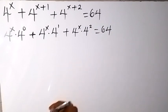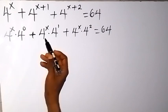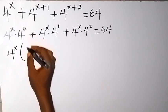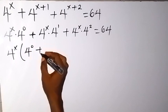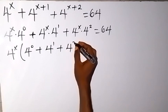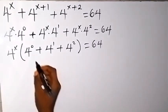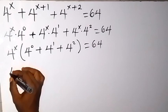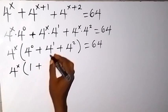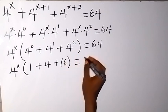From the law of indices we can see that 4 raised to power x is common. Let's bring that out: we have 4 raised to power x into bracket 4 raised to power 0, plus 4 raised to power 1, plus 4 raised to power 2, equals 64. We can rewrite this as 4 raised to power x multiplied by: 4 raised to power 0 is 1, plus 4 raised to power 1 is 4, plus 4 raised to power 2 is 16, equals 64.